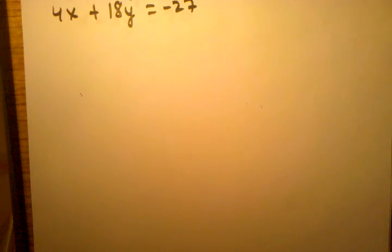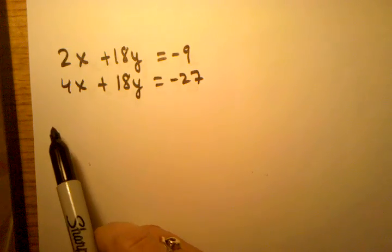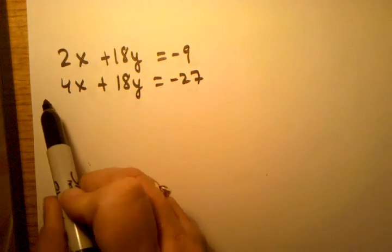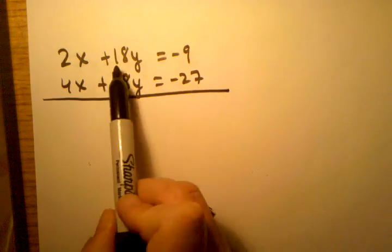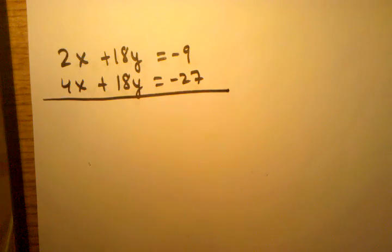In this one, I'm not going to want to add, I'm going to want to subtract the two equations, because if I were to subtract the two equations, I would end up with having to do 18y minus 18y, and that's going to get me zero. And that's what I want to get.